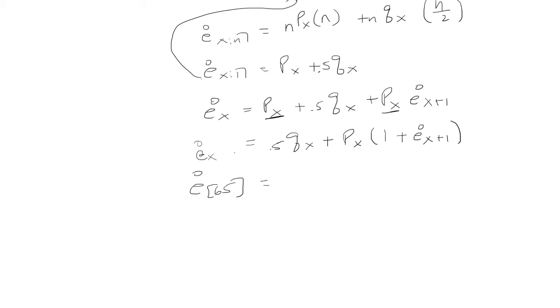Let's try this again. Copy the one above, so it's 0.5 Q select age 65, plus probability of age 65 select. And because there's a one year select period I could just write it as just 66, there's no more brackets. I'm given that this is 15.